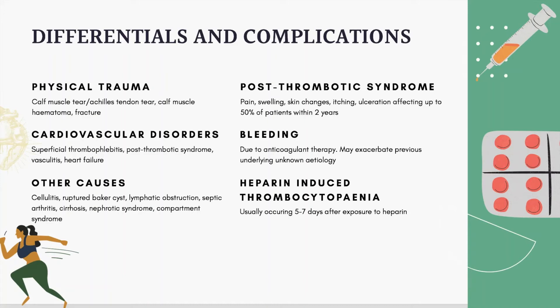In terms of complications, post-thrombotic syndrome affects up to 50% of patients within two years, with symptoms including pain, swelling, skin changes, itching and ulceration. Bleeding is an important complication usually due to anticoagulant therapy, and may exacerbate previous underlying unknown pathologies such as a gastric ulcer. Heparin-induced thrombocytopenia is also important to be aware of, typically occurring five to seven days after exposure to heparin, with signs and symptoms including pain, redness, swelling of the arm or leg, and bruising.